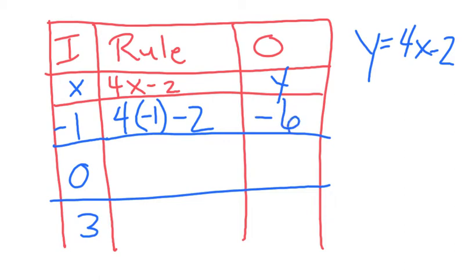Now, you do it again. Only this time you use 0. So, 4 times 0 minus 2. Well, 4 times 0 is 0. 0 minus 2 is negative 2.